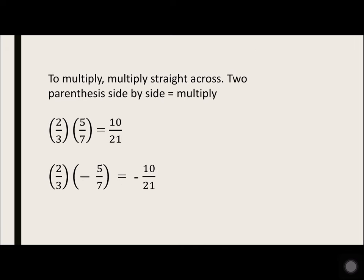To multiply, multiply straight across. Two parentheses side by side equals multiply. 2 over 3 times 5 over 7: 2 times 5 is 10, 3 times 7 is 21.